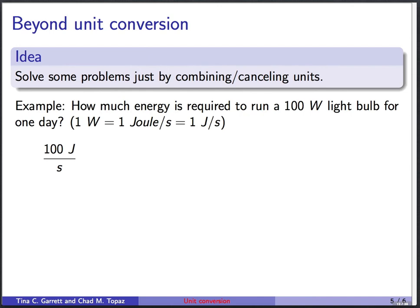Now in case you think this is boring, I know how to convert units, I want to point out that some problems can be solved simply by combining or canceling units. So we'll do a couple of examples here. How much energy is required to run a 100 watt light bulb for one day? In case you don't recall, watts here, the capital W, are a measure of power. And power is energy per time.